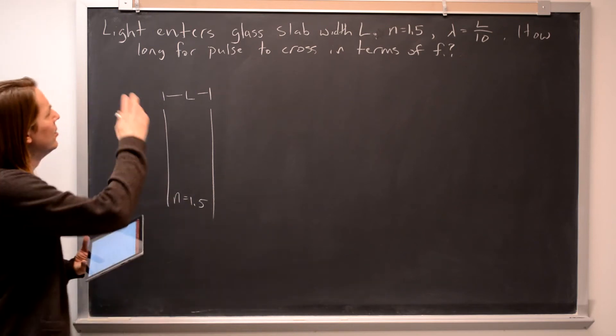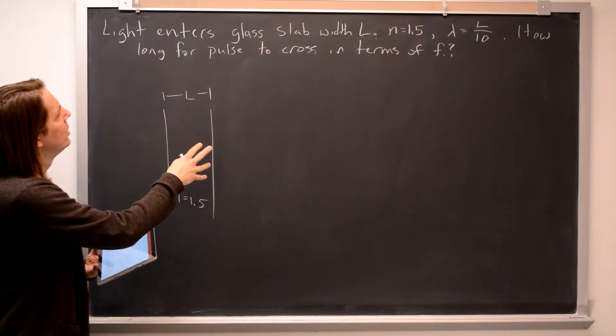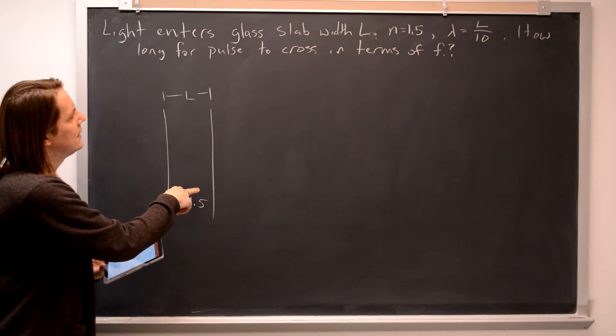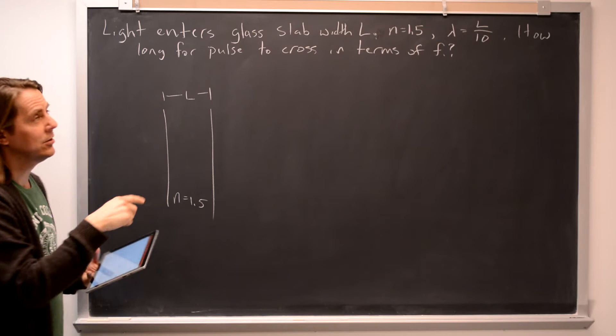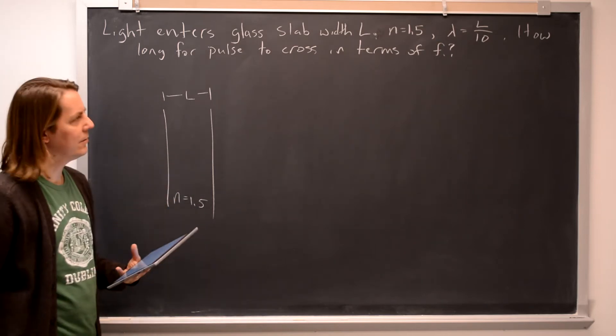Here's sort of a strange one. Light enters a glass slab of width L, and the index is 1.5, which is typical for glass, and the wavelength of the light is this width L over 10.